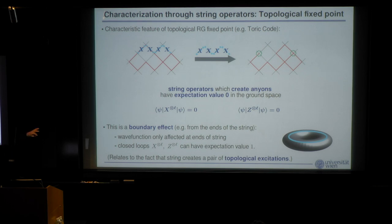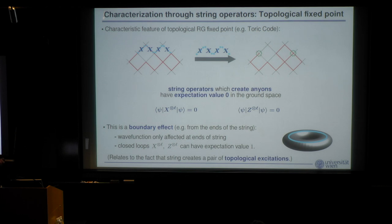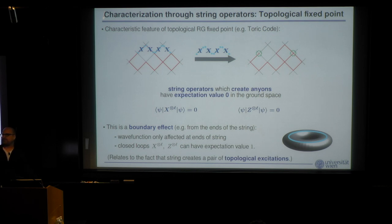An important point is that this is a boundary effect: the expectation value is zero not because of the bulk of the string, but because of what happens at the endpoints, where the anyonic excitations are created. In the bulk of the string, the closed-loop constraint is satisfied. Conversely, closed-loop operators — wrapping around the torus — have expectation value one for the right ground state. So the zero is purely a boundary effect from the string endpoints.